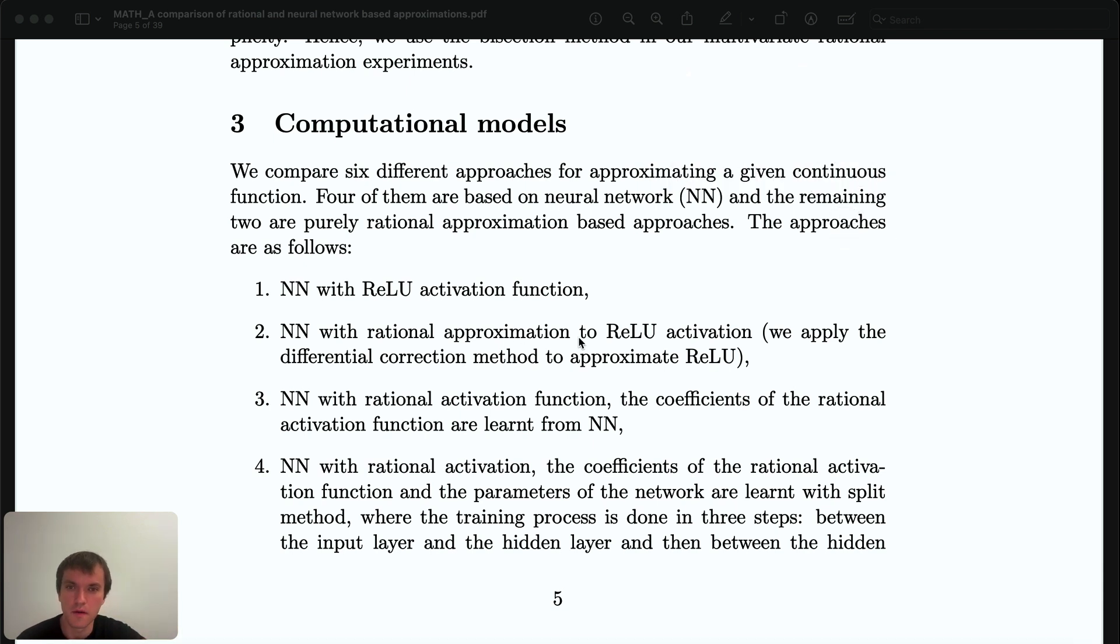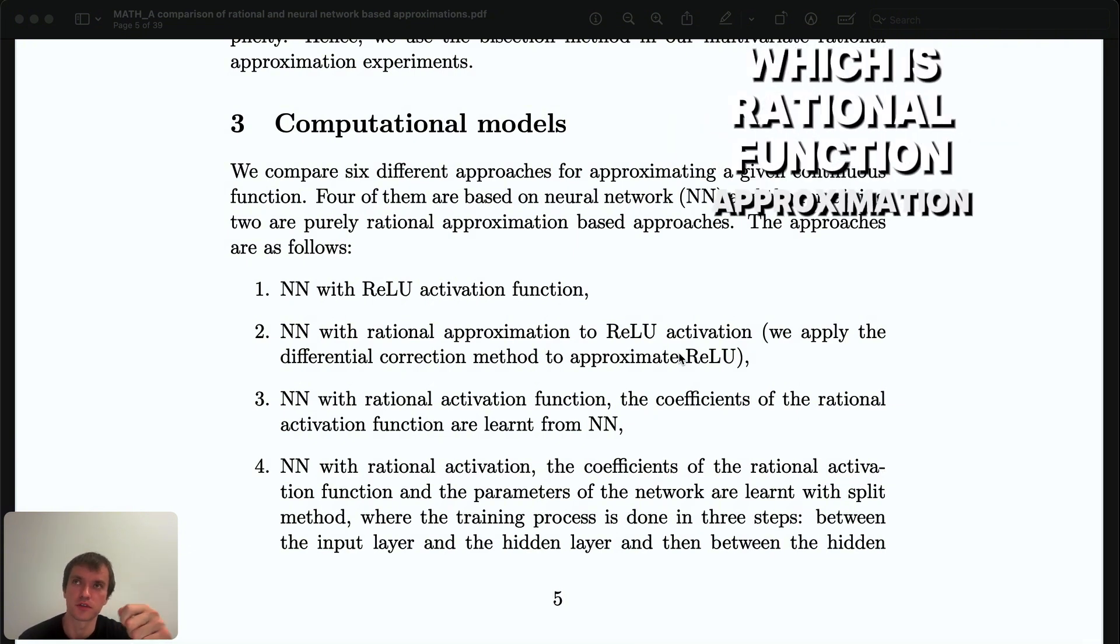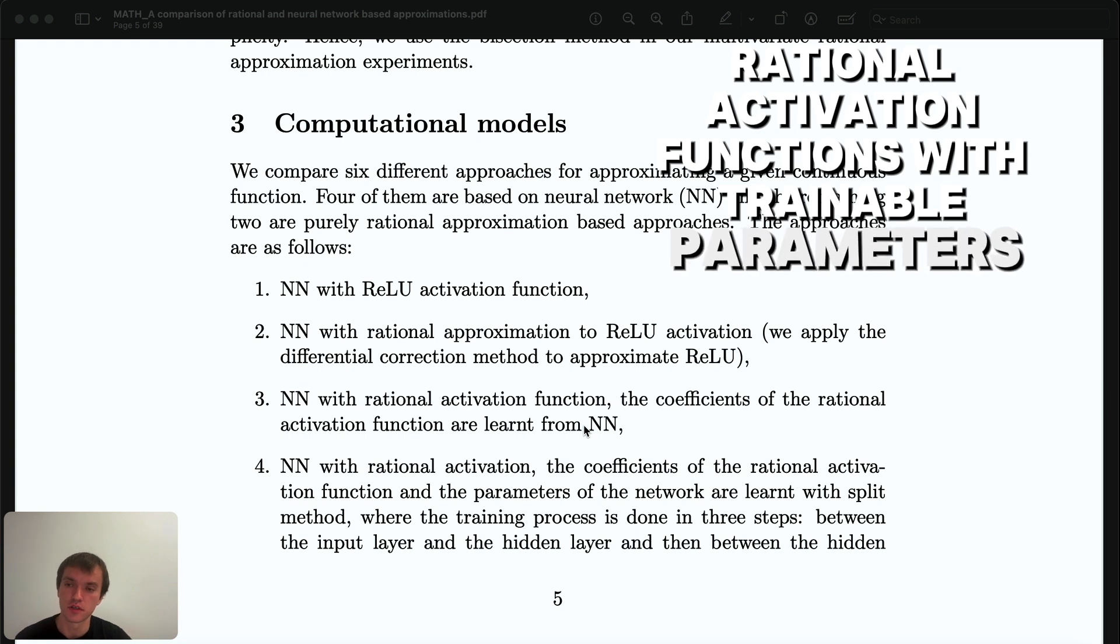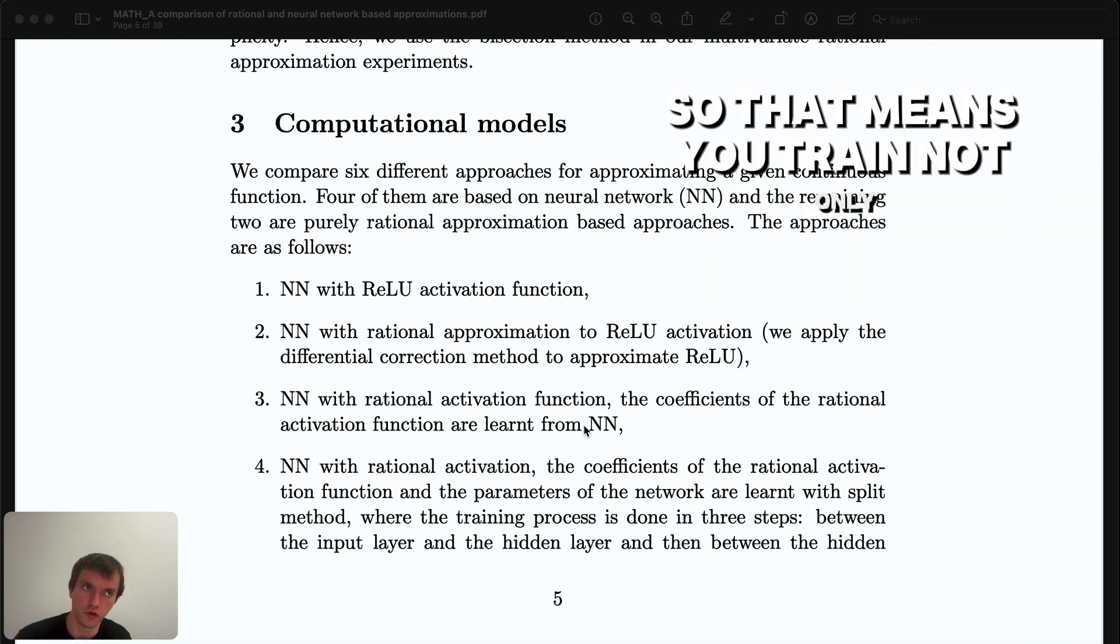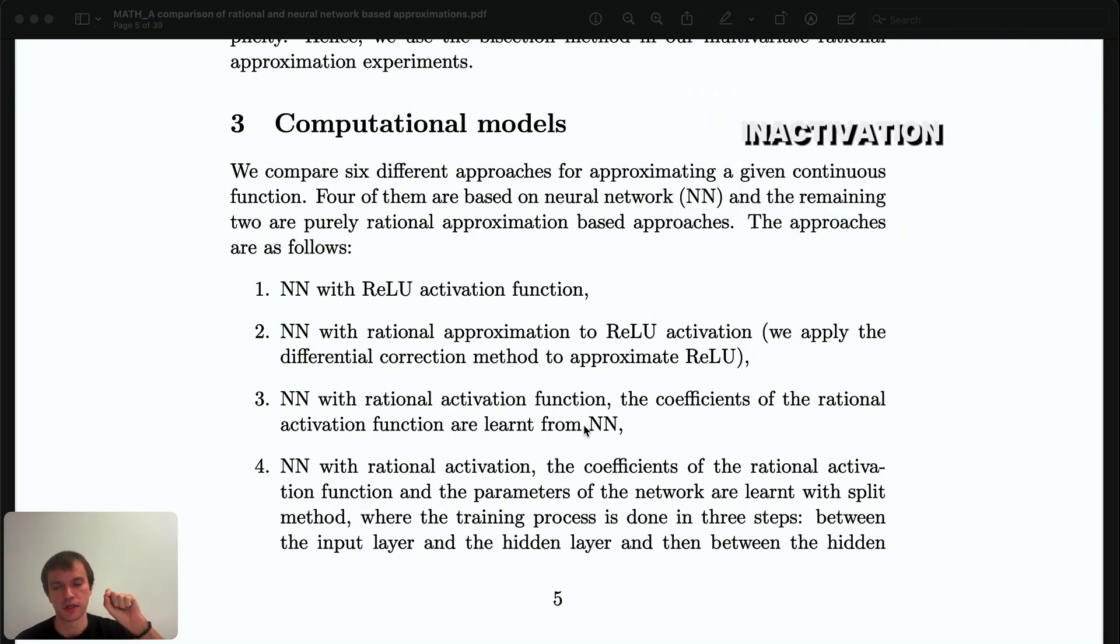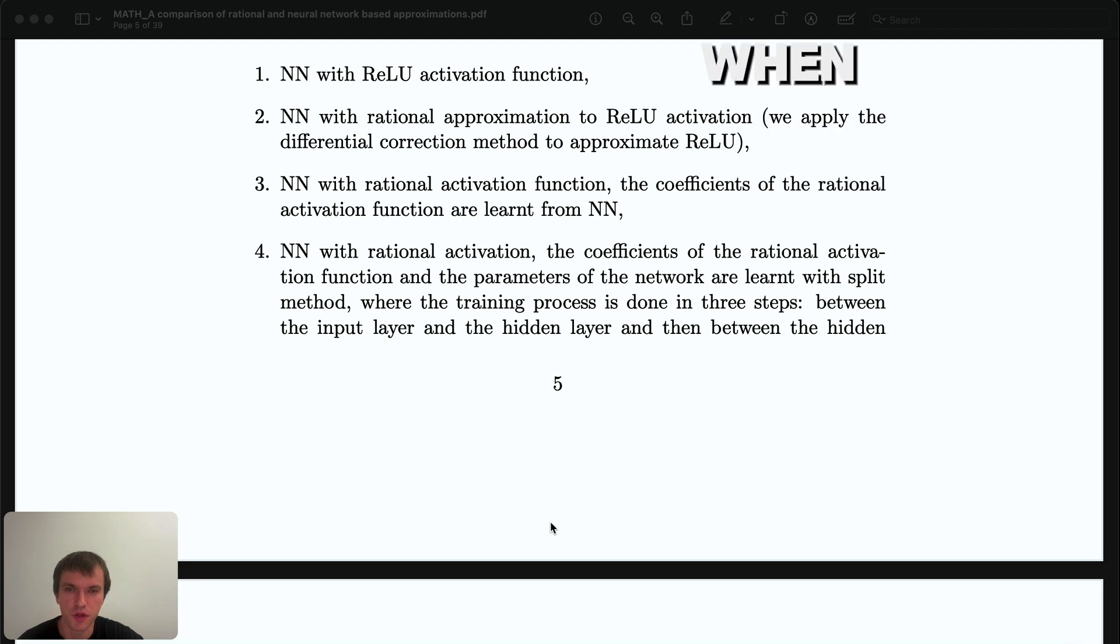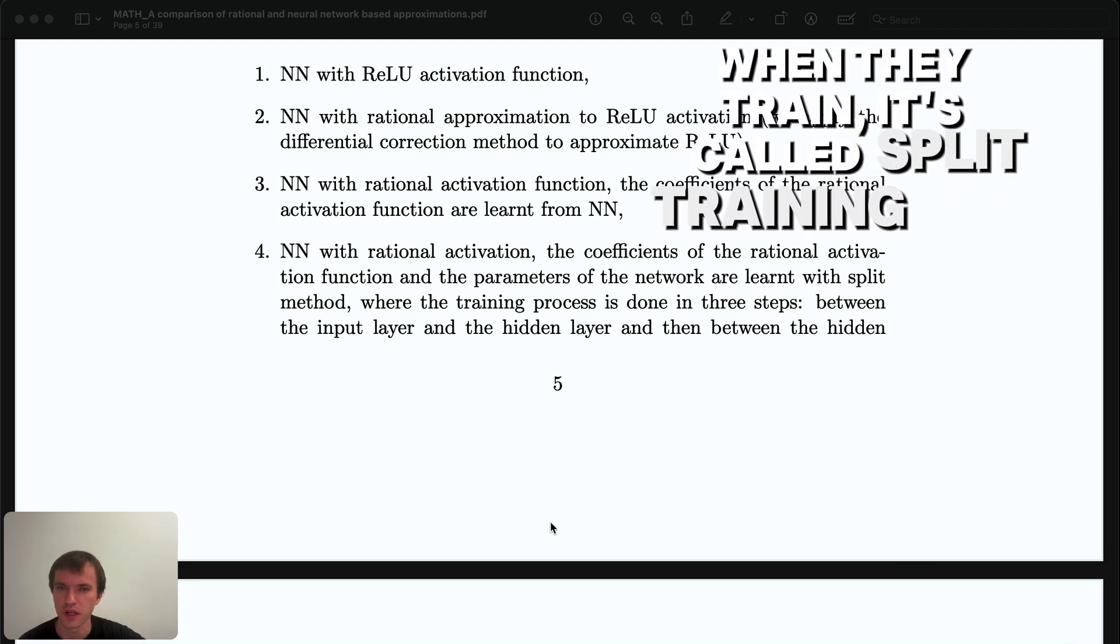Then they train rational approximation fraction to ReLU activation, so they do the activation function which is a rational function approximation of ReLU. Then they do rational activation functions with trainable parameters, so that means you train not only the weights of the neural networks but also you train the coefficients in the activation function itself. Then they do the fourth one with some training procedure when they train—it's called split training and stuff—and I didn't really understand upon my first reading.